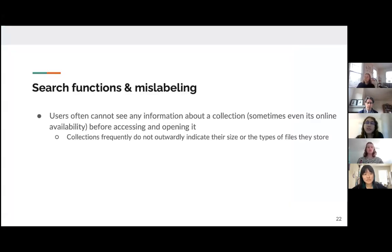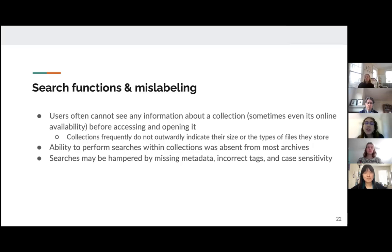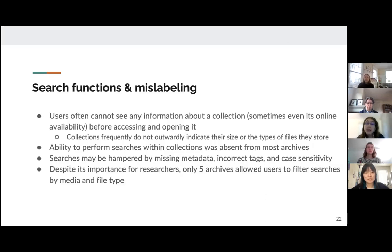Our next category is discoverability. One issue we saw was in search functions and mislabeling. Users often can't see information about a collection before accessing it and opening it, which makes browsing more cumbersome. Collections also frequently do not outwardly indicate their size or the types of files they store — you have to click into the collection to find out. Also, the ability to perform searches within collections was absent from most archives.